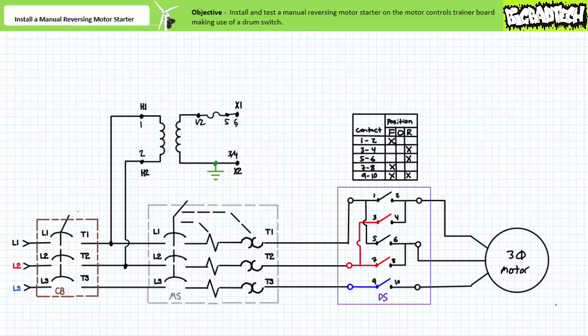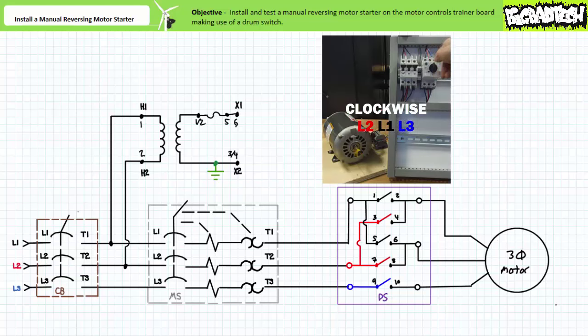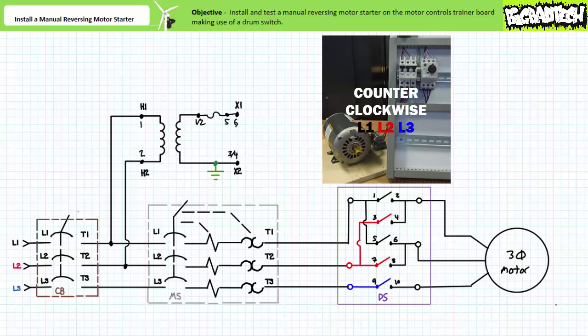To change direction of rotation, a technician must lock out and tag out the system, swap any two hardwired phase connections, and return it to service. This particular hardwired manual motor starter rotates the motor clockwise. This particular hardwired manual motor starter rotates the motor counter clockwise.